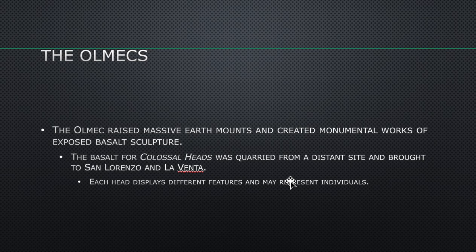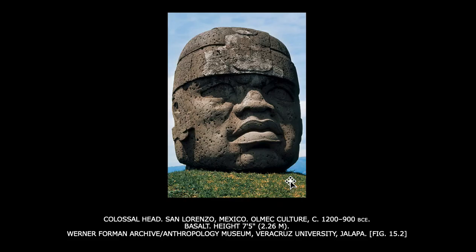The Olmecs raised massive earth mounds and created monumental works of exposed basalt sculpture. The basalt for colossal heads was quarried from a distant site and brought to San Lorenzo and La Venta. Each head displays different features and may represent individuals. This is prehistoric — we don't know a lot about Olmecs, but these heads clearly survived. Several have been found, really large heads. The height of this one is 7 feet 5 inches.